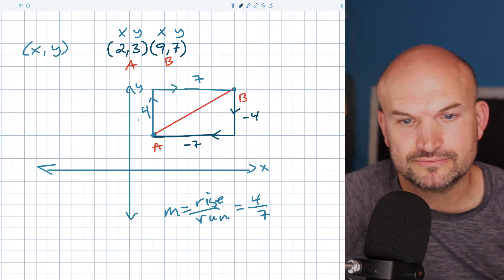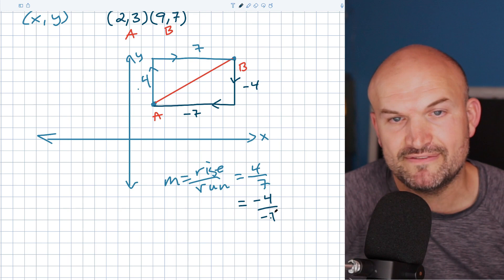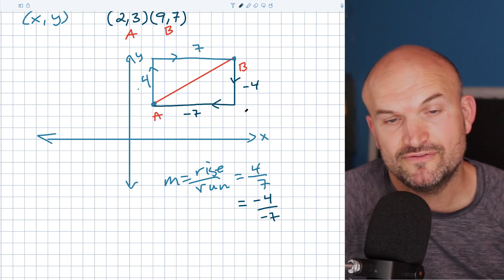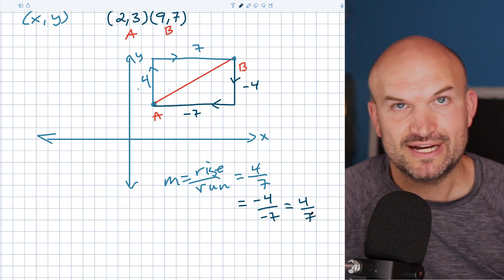Now let's take a look at this slope. This one would be a negative four over a negative seven. The change vertically is negative four and the change horizontally is negative seven. Well, guess what that equals? That's still a four over seven. So that's good.